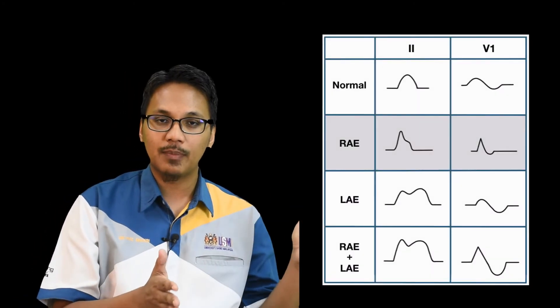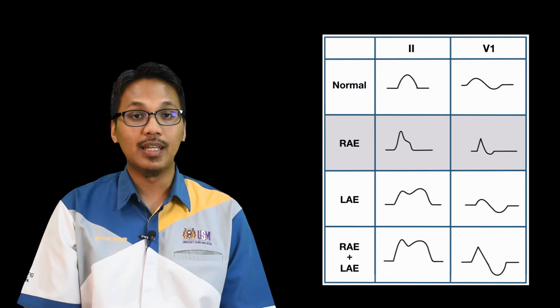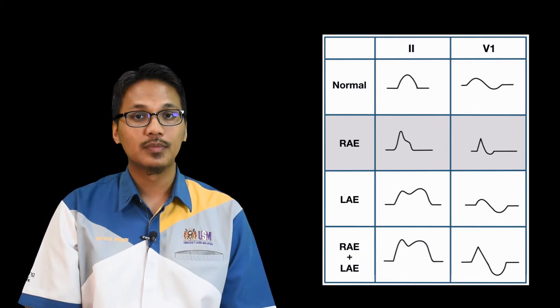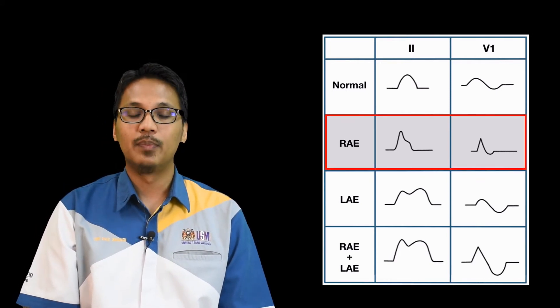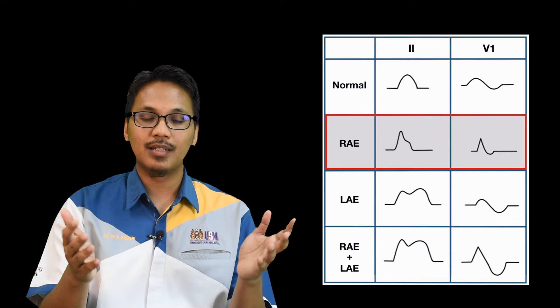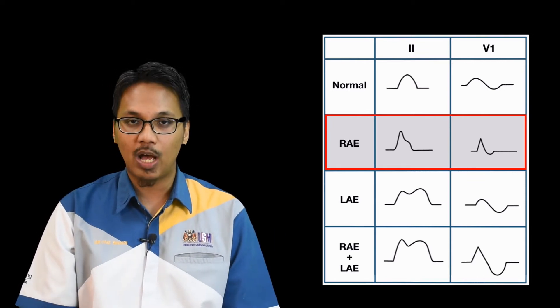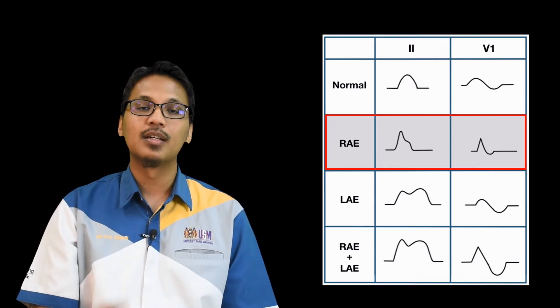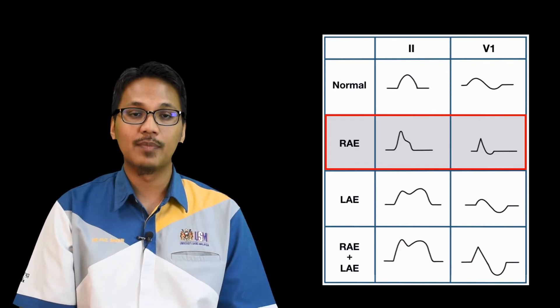As you can see in the diagram — similar to our P-Mitrale before — we usually look at lead 2 as well as lead V1, because the best leads to assess the P-wave are V1 and lead 2, which is our rhythm strip.